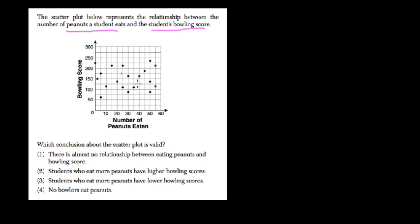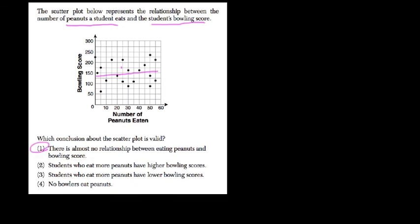And in fact, look at the data, how it's scattered all over the place. You can kind of draw a line of best fit, maybe like this, but not really. I mean, the data is all over the place. So here I would say the only valid answer is that there is no relationship between the peanuts you eat and the bowling score.